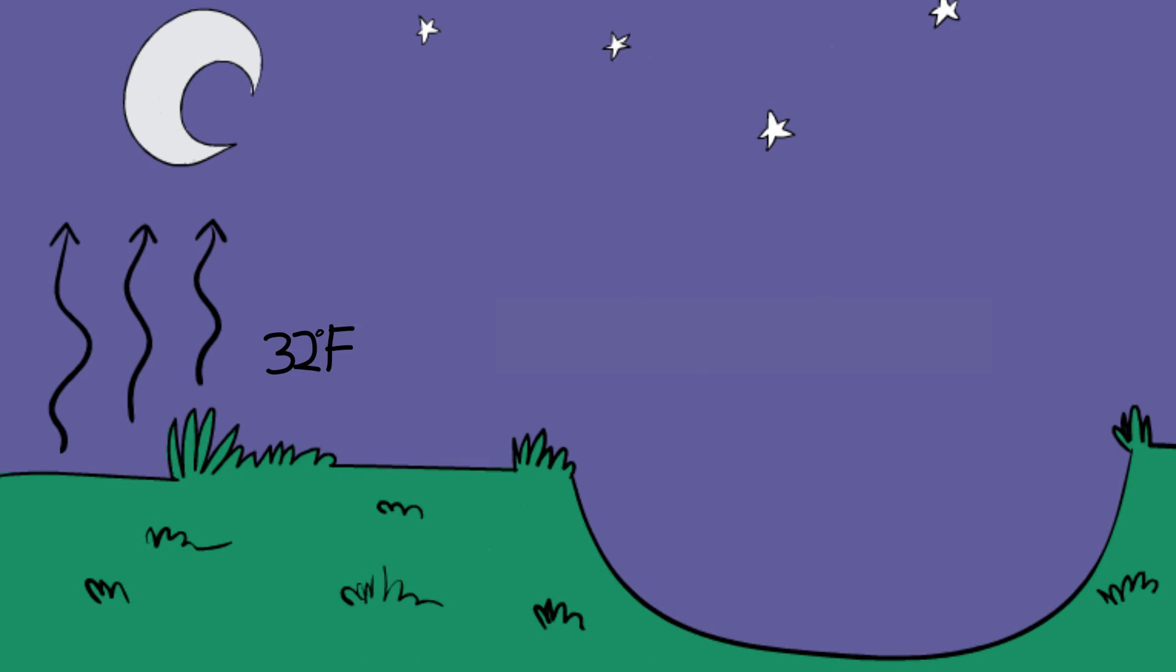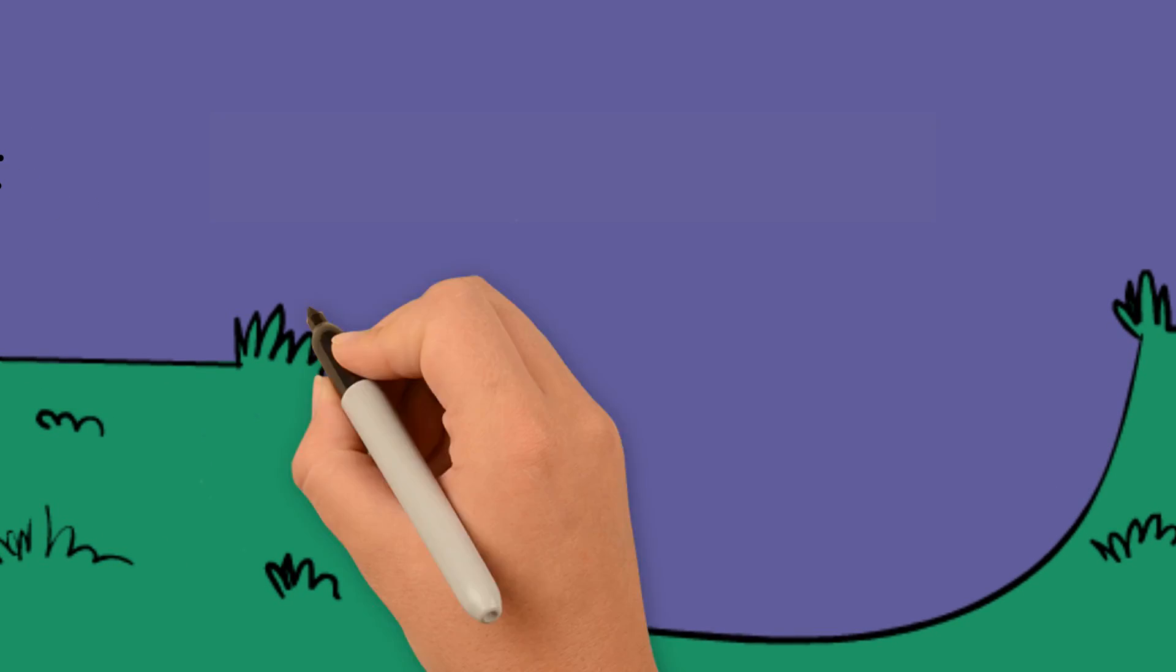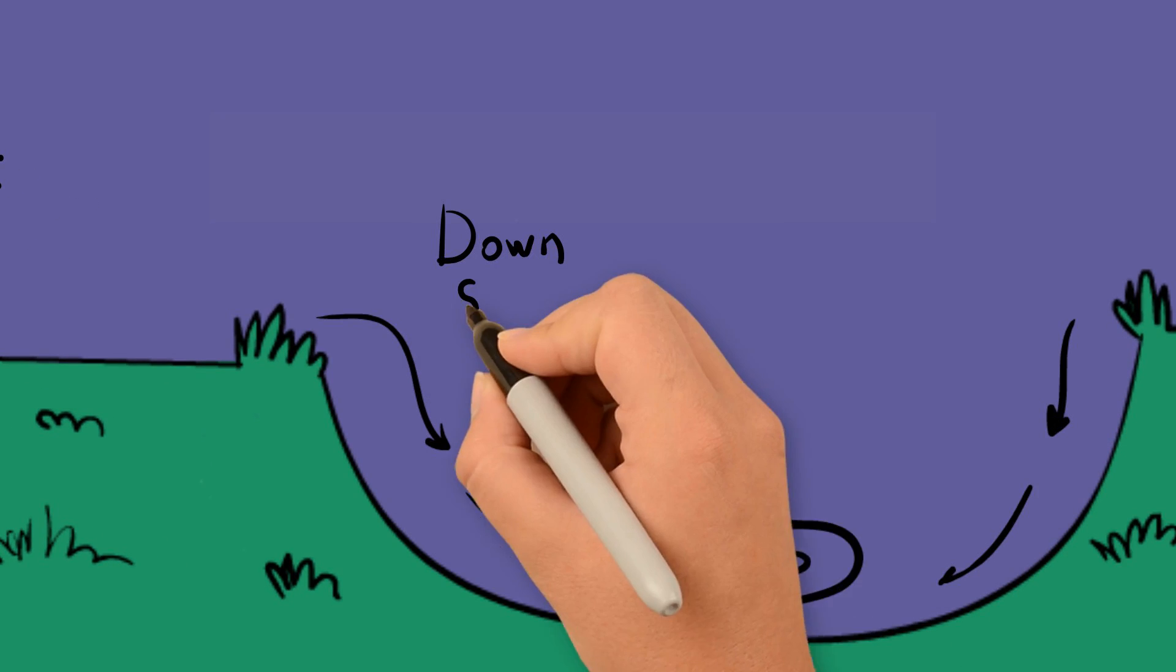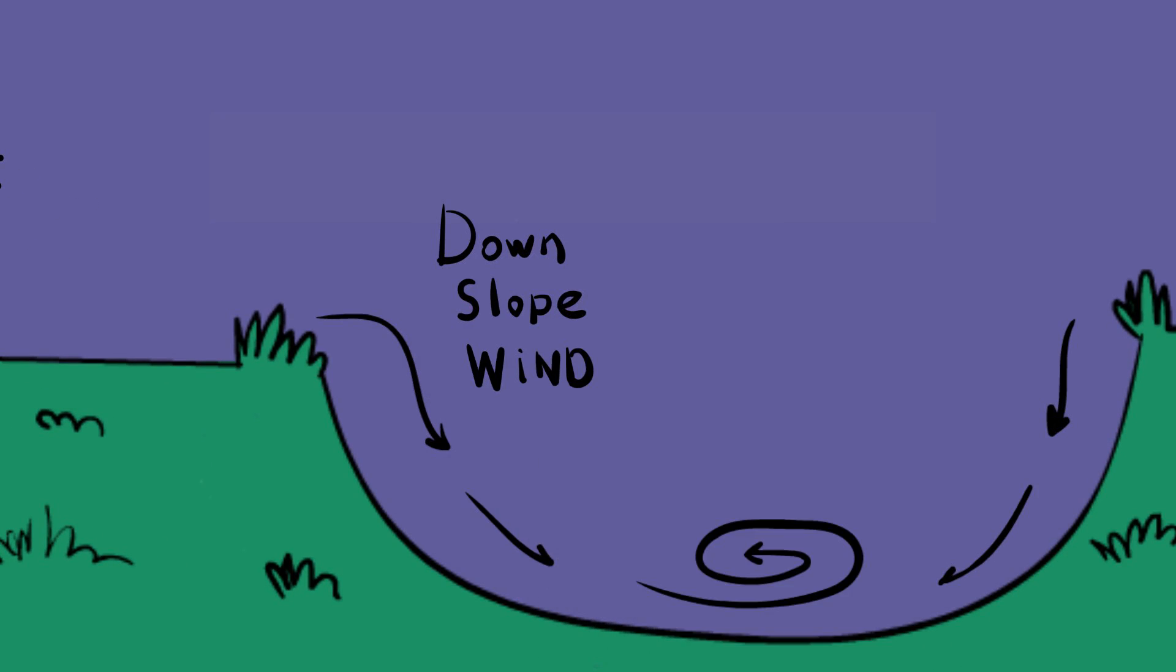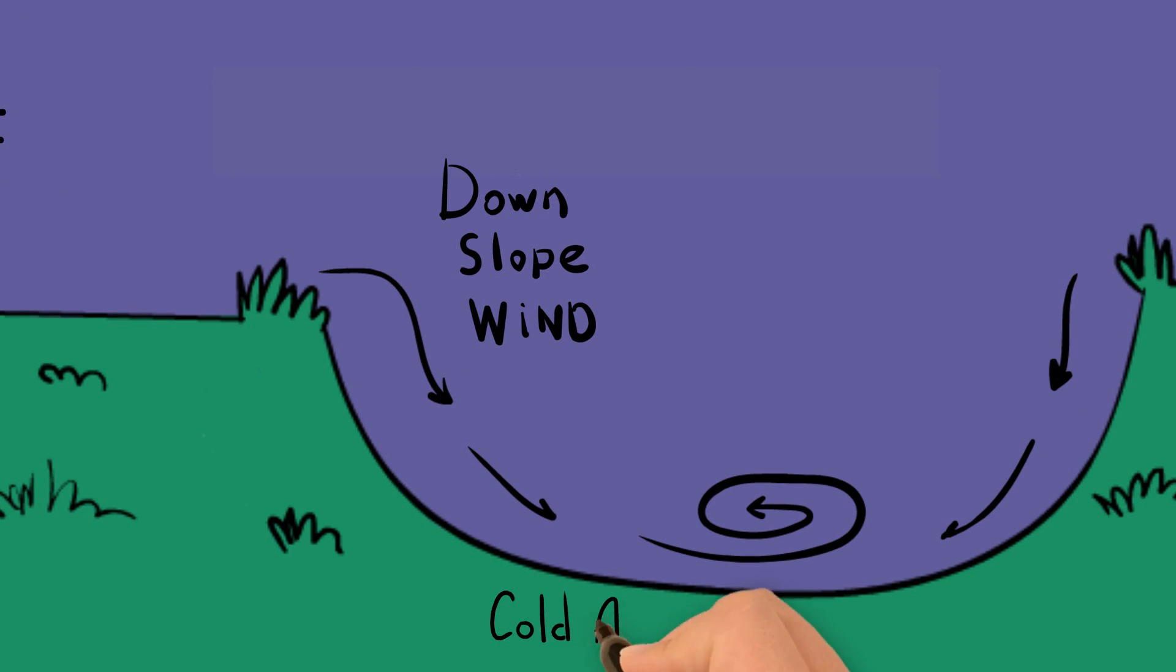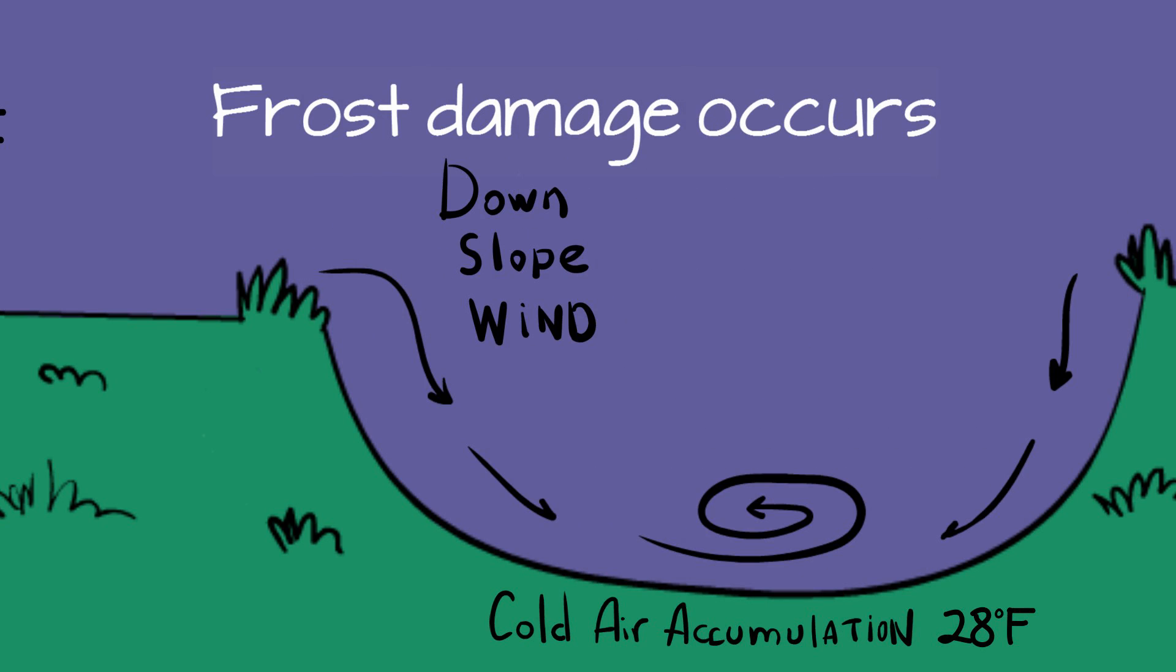During a radiation frost night, the heaviest cold air molecules flow downhill like water due to gravity. This cold air settles in low elevation areas that do not allow for adequate drainage. As the cold air accumulates in an area, frost damage occurs.